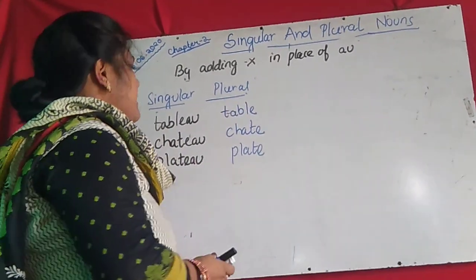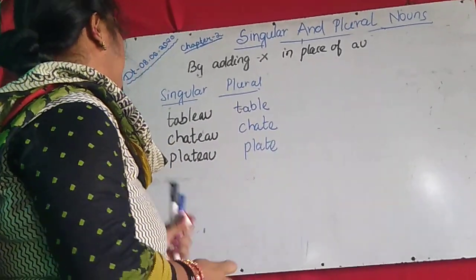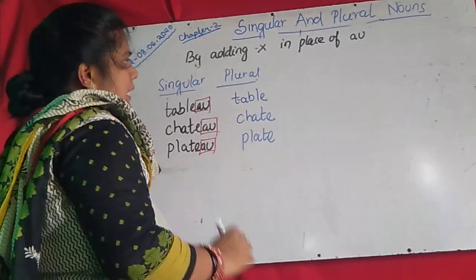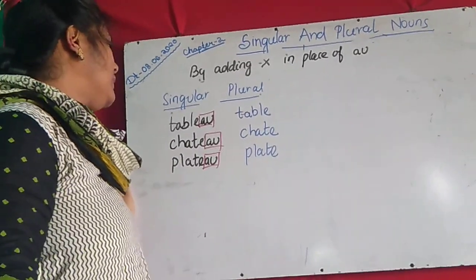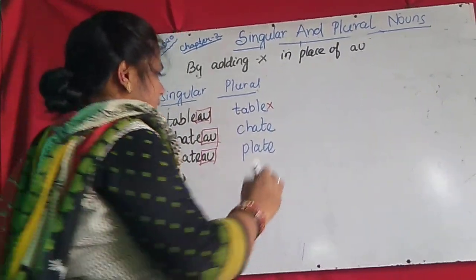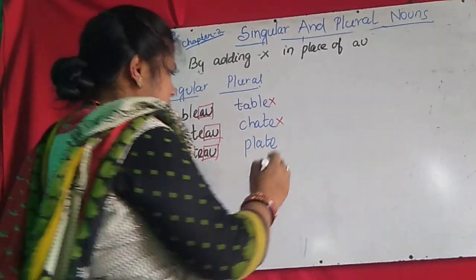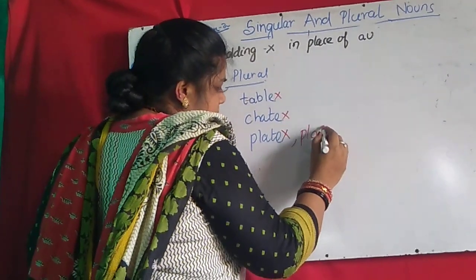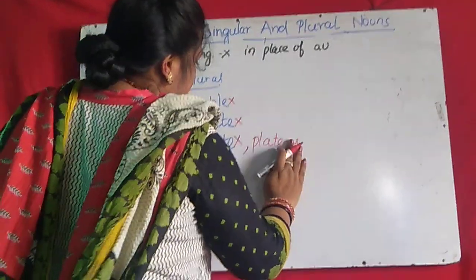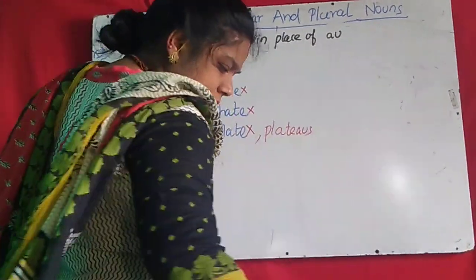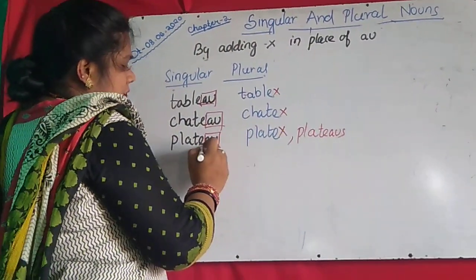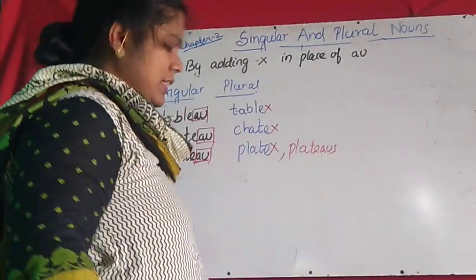Another rule: if the word is ending with AU, then the plural will be formed by simply adding X — cutting the AU and adding X. So 'tableau' becomes 'tableaux,' 'chateau' becomes 'chateaux,' 'plateau' becomes 'plateaux.' Also writing the full word plus X is correct. So if the word is ending with AU, then the plural will end with X.